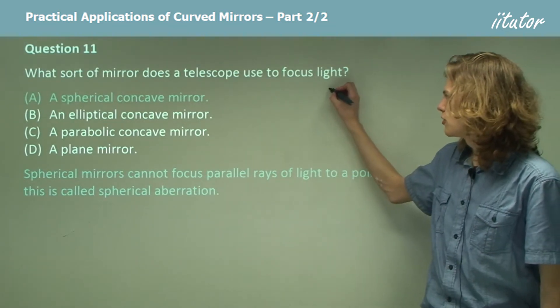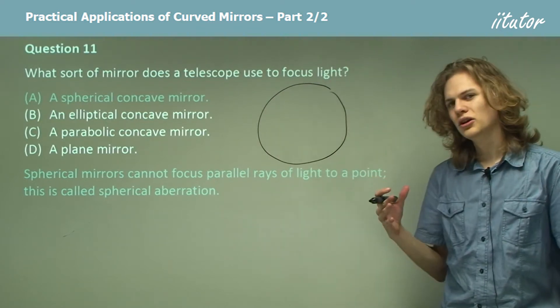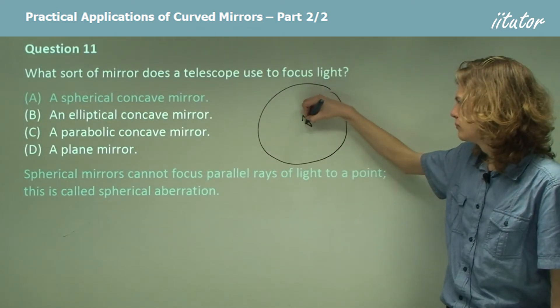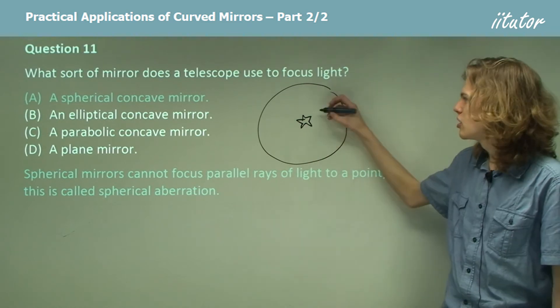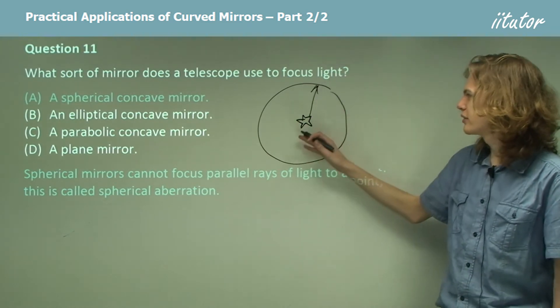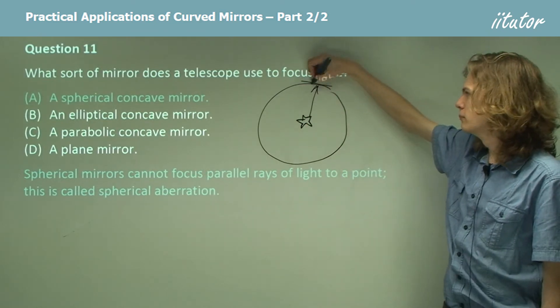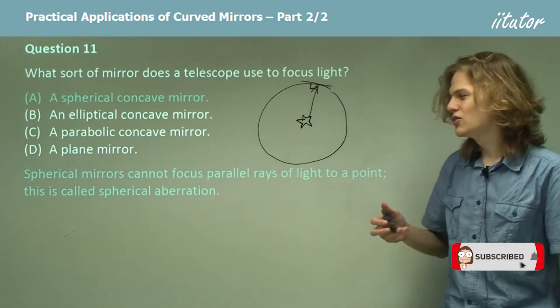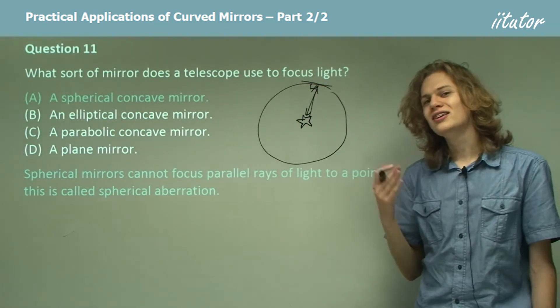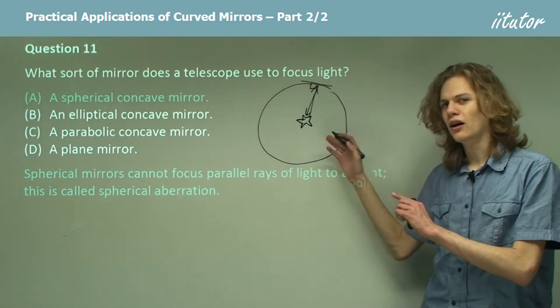Let's consider a spherical mirror. We can see that if we have a light source right in the middle, then light rays coming out from that will strike the mirror perpendicular to the surface of the mirror. That means they'll be reflected in exactly the same direction.